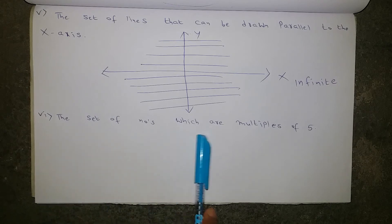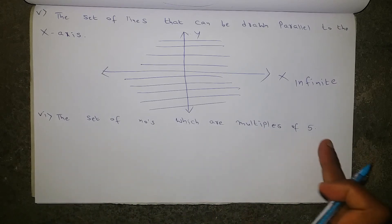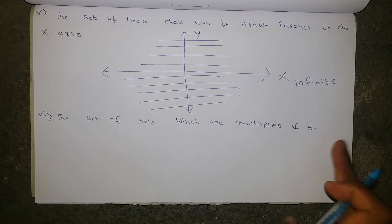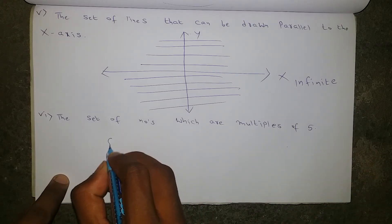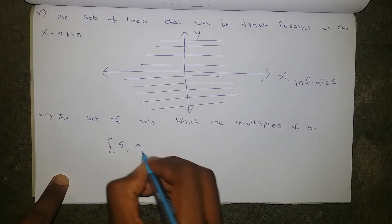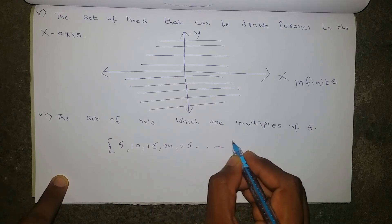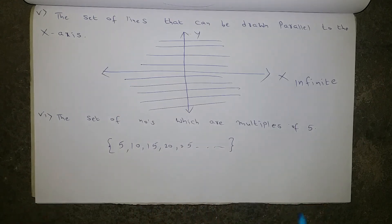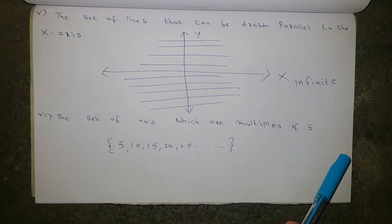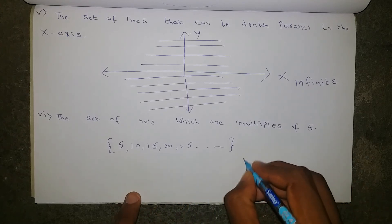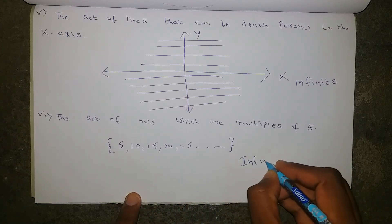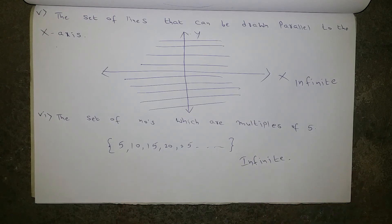Next one: the set of numbers which are multiples of 5. Multiples of 5 means we write the multiplication table of 5: 5, 10, 15, 20, 25 and so on. Because he didn't mention multiples of 5 less than some limit, infinite multiples will be there. So this set is an infinite set.